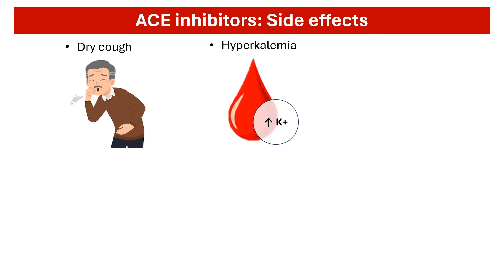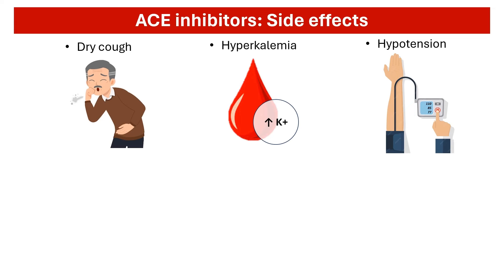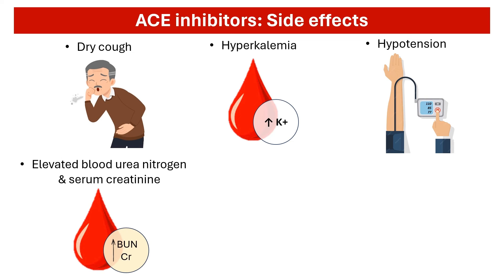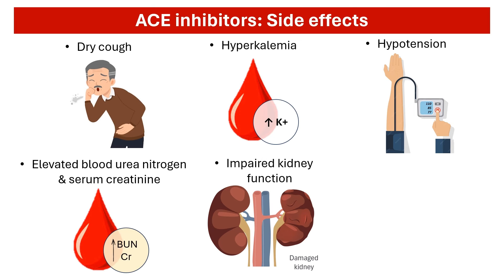Some patients may experience a drop in blood pressure upon initiating ACE inhibitor therapy, leading to dizziness or fainting, especially when rising from a seated or lying position. ACE inhibitors can increase blood urea nitrogen and serum creatinine, but this is usually reversible upon discontinuation of the medication. These drugs can also affect kidney function, particularly in individuals with pre-existing kidney disease.